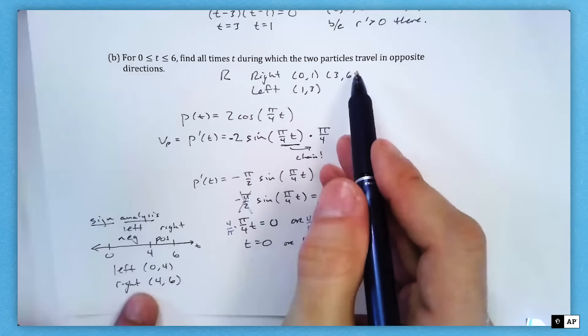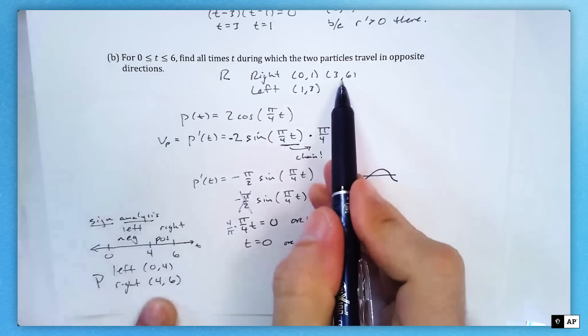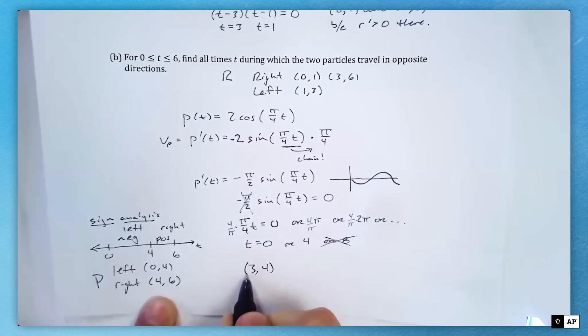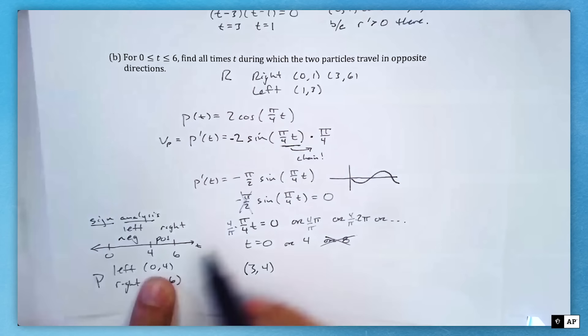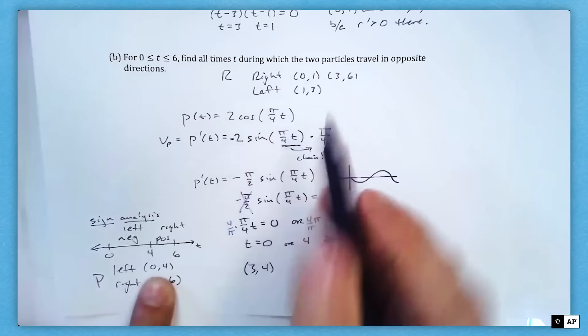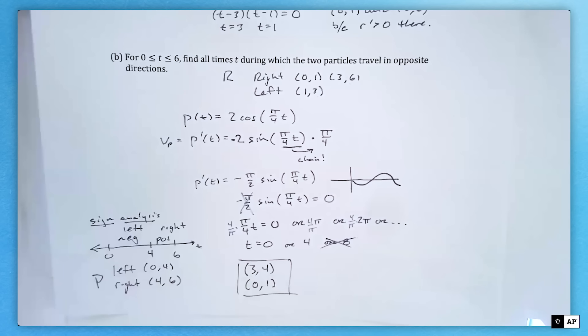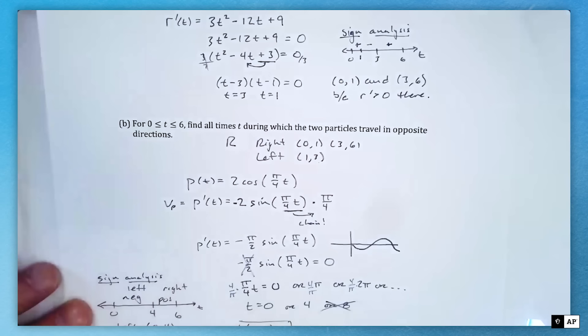This first interval is my negative, which means we're going left, and this is my positive, which means I'm going right. So I'm left from 0 to 4 and right from 4 to 6. If I compare that to this: from 3 to 6, I'm going right with R; from 4 to 6, I'm going right with P. There's an overlap. From 4 to 6, they're both going right. But from 3 to 4, R is going right and P is going left. P is going left from 0 to 4. 1 to 3 is fine, but 0 to 1 will be opposite as well.